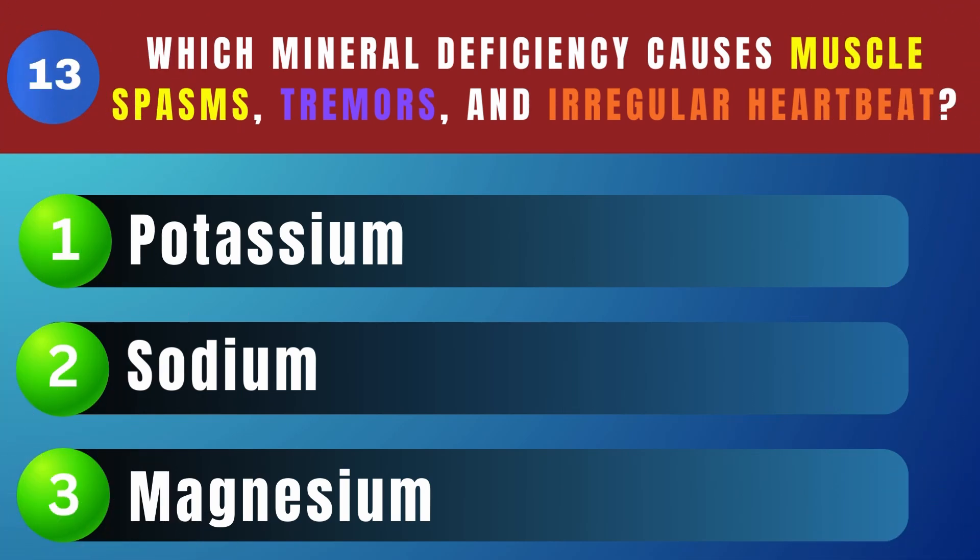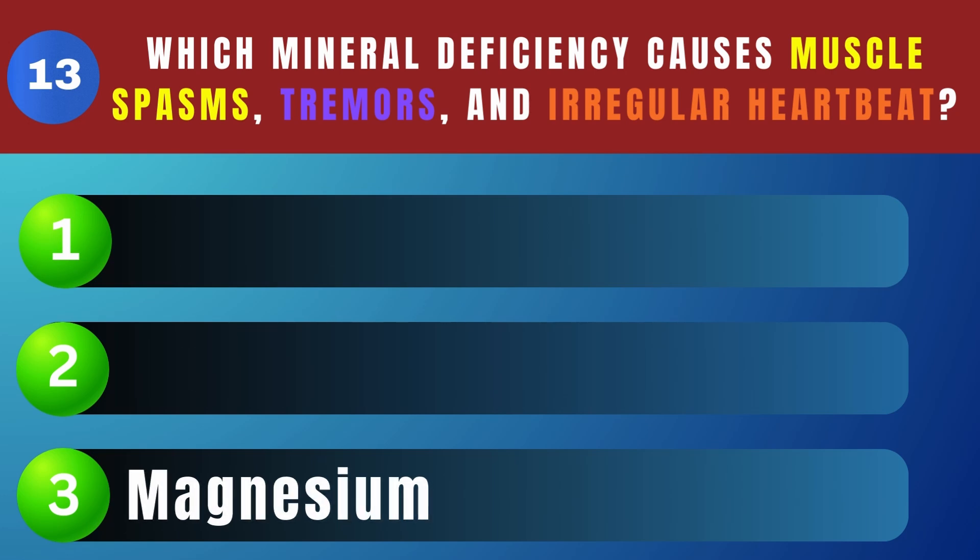Which mineral deficiency causes muscle spasms, tremors, and irregular heartbeat? Magnesium.